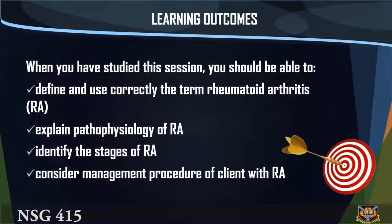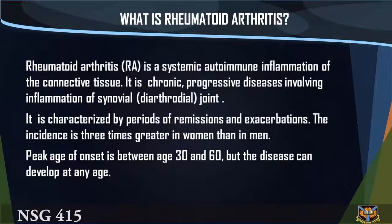Learning outcomes: when you have studied this session you should be able to (1) define and use correctly the term rheumatoid arthritis (RA), (2) explain the pathophysiology of RA, (3) identify the stages of RA, (4) consider the management procedure of clients with RA. Rheumatoid arthritis (RA) is a systemic autoimmune inflammation of connective tissue.